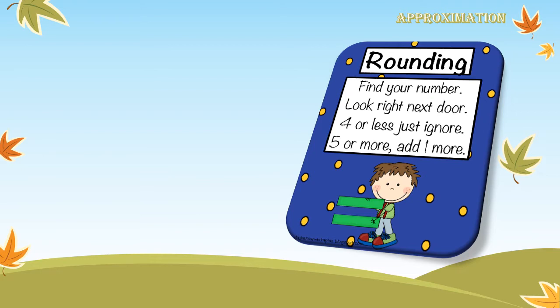Let's have some examples about rounding. If I have the number 3,874 and I wanted to approximate to the nearest 10, where is the 10s place? Excellent — it's the 7, already colored red. Let's sing the song together: find your number — it's 7. Look right next door — it's a 4. Four or less? Just ignore. So I will not add any digit to 7. I will write 3, 8, 7 and replace 4 with 0. The answer will be 3,870.